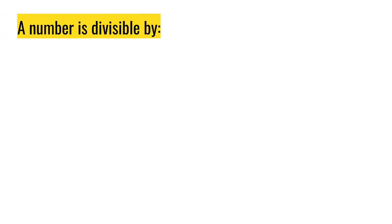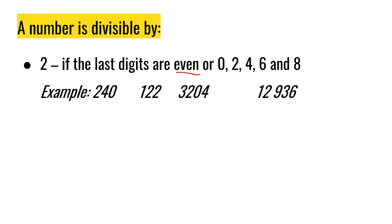Let's talk about the rules. A number is divisible by 2 if the last digits are even. So what are the even numbers? Even numbers are 0, 2, 4, 6, and 8. Ang number ay nagtatapos sa 0, 2, 4, 6, and 8. Examples: 240, last digit is 0, meaning it is divisible by 2. 122, last digit is 2, means divisible by 2, or pwede nating i-divide sa 2.